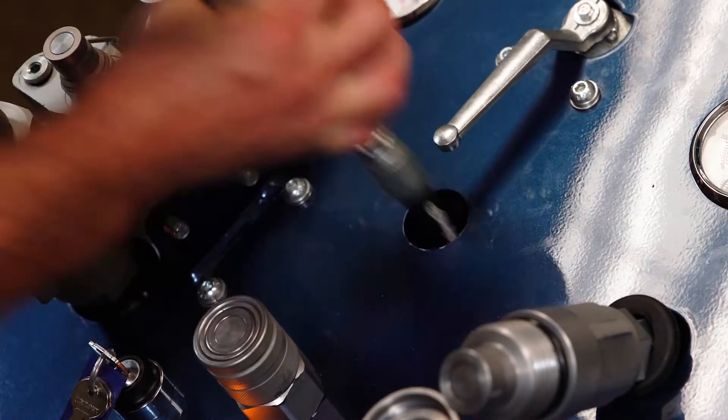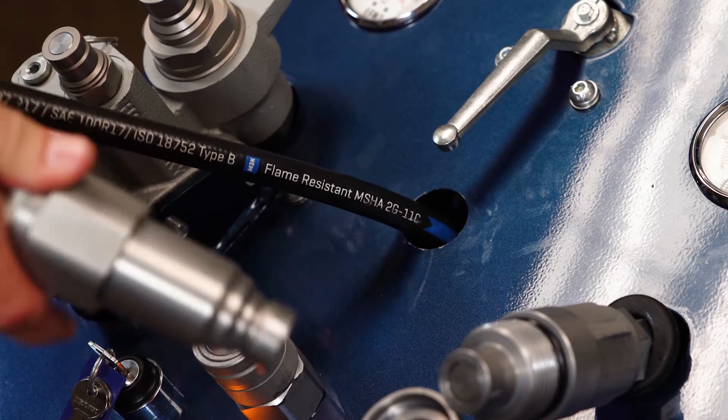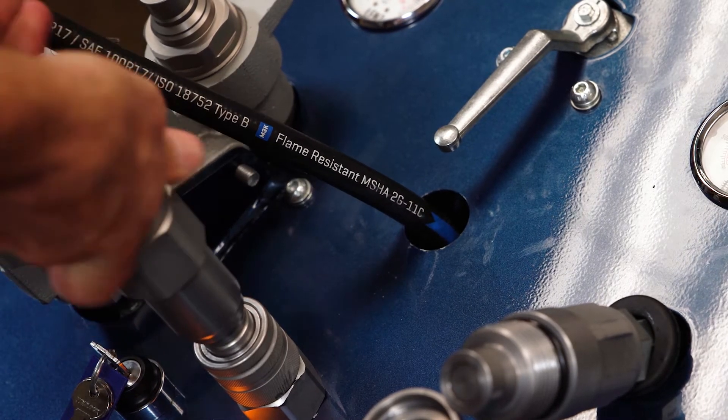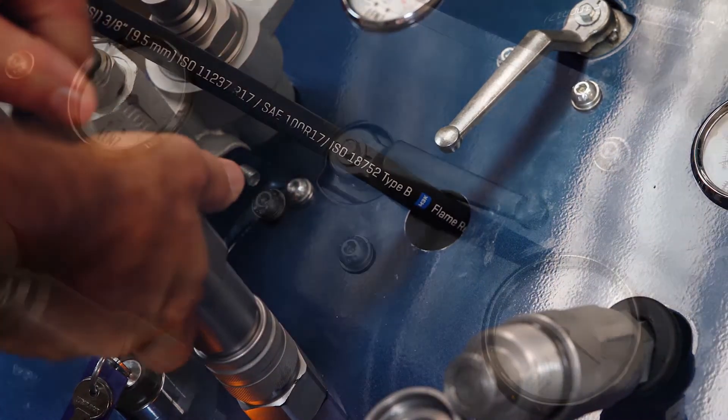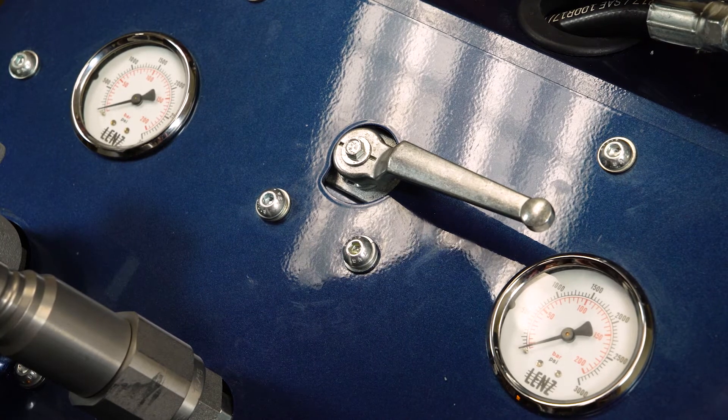We have about 2,500 psi trap pressure in this line, and we're going to make our connection into the female. As I'm making that connection down, you can see the gauge from 2,600 psi to zero.